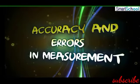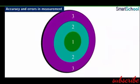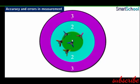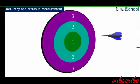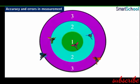Accuracy and errors in measurement: In measurements, accuracy and precision are two important terms. For example, if five darts are thrown and all hit the bull's eye, each throw is said to be accurate and precise. Accuracy is the degree of a measured value to the true or actual value. How close the darts land to the center of the bull's eye determines the accuracy of the throw.